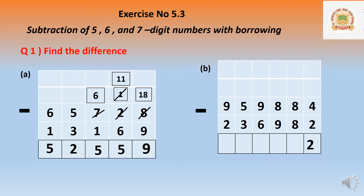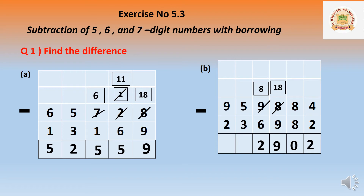In the hundreds place: 8 and 9 — 8 is smaller than 9, so we borrow from the thousands. The thousands digit 9 becomes 8, and the hundreds place becomes 18. Eighteen minus nine equals nine. In the thousands place: 8 minus 6 equals 2. In the ten-thousands place: 5 minus 3 equals 2.